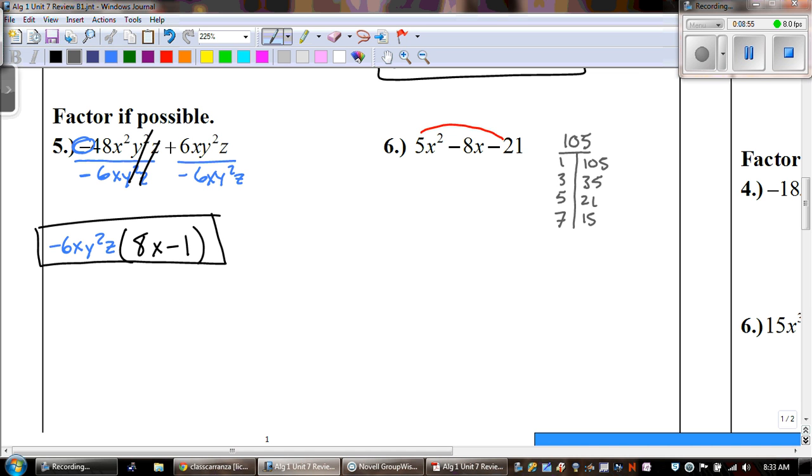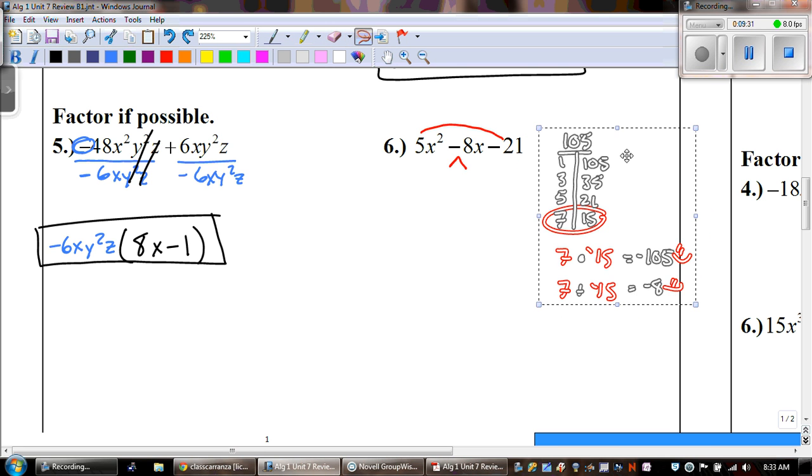And then, 8, 9, 10, 11, 12, 13, 14. None of those work. So, in this set, we're looking for numbers that multiply to a negative 105. And add to get to negative 8. And out of those, it's only 7 and 15, except one of them has to be negative. And it's going to be the 15, because we need a negative 8. So, we're going to go ahead and split the middle term. I'm going to move this off to the side for a little bit, so I have more room to work.